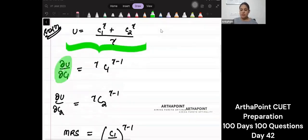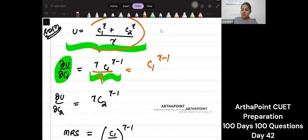I found marginal utility with respect to C1. Differentiate this with respect to C1. So you will get C1 to the power of this. Differentiate this with respect to C2. So you will get C2 to the power of this.